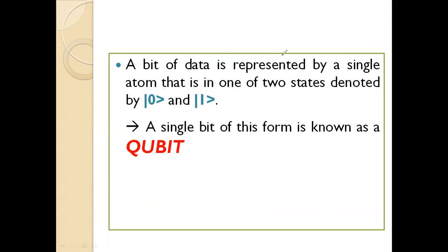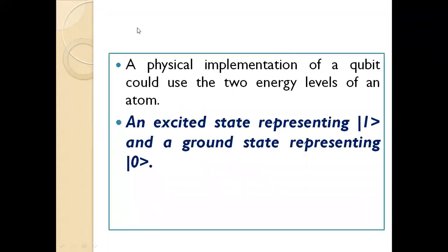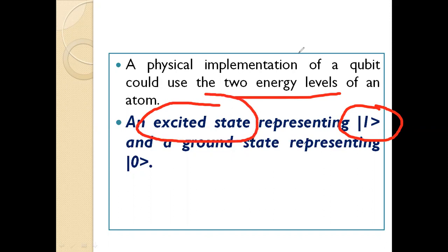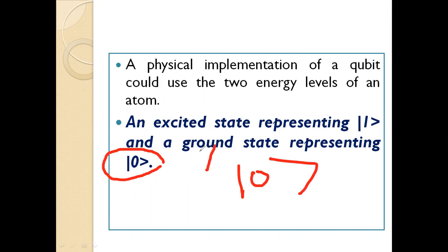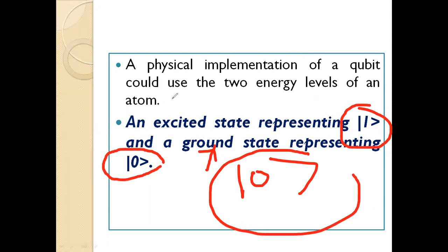A single bit of this form is known as a qubit. A physical implementation of a qubit could use the two energy levels of an atom — the excited state, written as |1⟩, and the ground state, written as |0⟩. So a qubit uses both the excited state and the ground state of an atom.